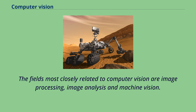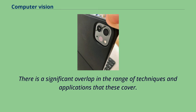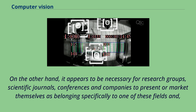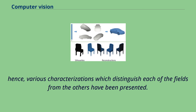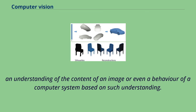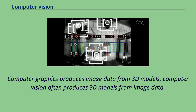There is a significant overlap in the range of techniques and applications that these cover, implying that the basic techniques used and developed in these fields are similar. In image processing, the input is an image and the output is an image as well, whereas in computer vision, an image or a video is taken as input and the output could be an enhanced image, an understanding of the content of an image, or even a behavior of a computer system based on such understanding. Computer graphics produces image data from 3D models, while computer vision often produces 3D models from image data.